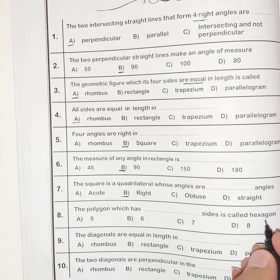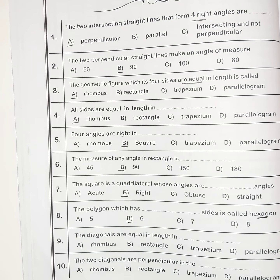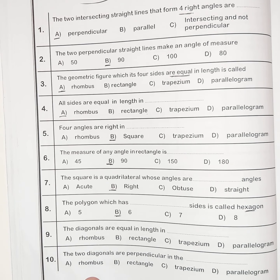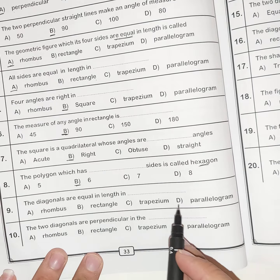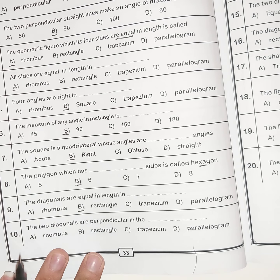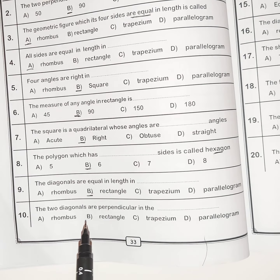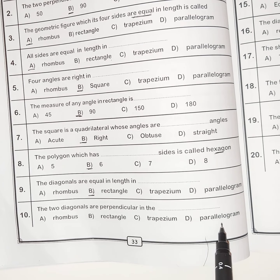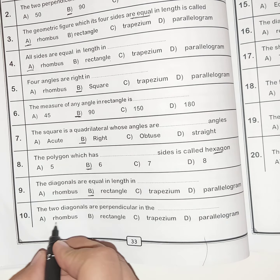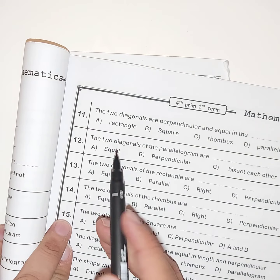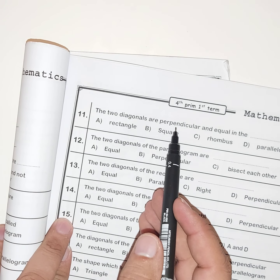Number seven: the square is a quadrilateral whose angles are all right angles. Number eight: the polygon which has six sides is called a hexagon. Number nine: the diagonals are equal in length in a rectangle.